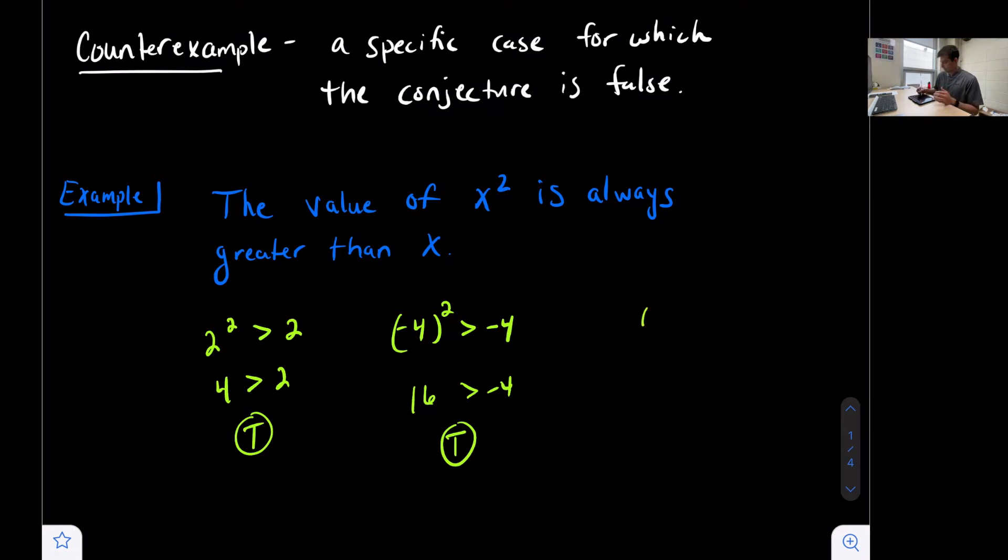But what about zero? What if we said zero squared is greater than zero? Well, zero squared is zero. Zero is not greater than zero. So we have found our counterexample, which then would tell us that this statement is false, because we're able to find our counterexample.